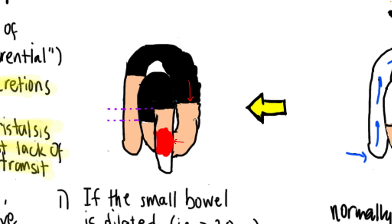Next, if the intestines stretch, the body thinks it needs to secrete more fluid into the lumen. However, due to the increased luminal pressure, there will be poor absorption across the capillaries.